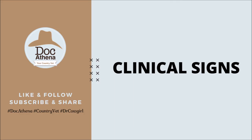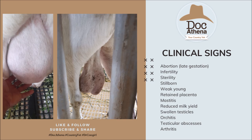How do we know if our animal is already infected with Brucella? The clinical signs include: abortion — usually late-stage — infertility, sterility, stillborn, weak young (weak calf, kid, lamb, puppy, or piglet), retained placenta, mastitis, and reduced milk yield. In males, there can be swollen testicles, and if there is fever or ongoing inflammation of the testicles, it could be orchitis. Other cases may present testicular abscesses, and in some cases, arthritis.